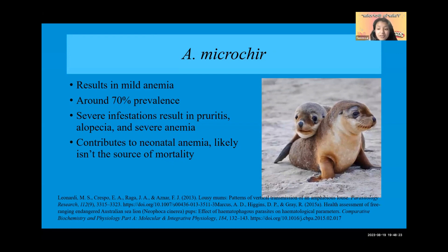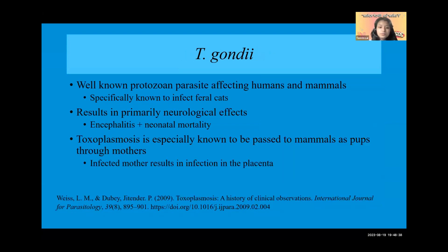If an infection is severe, it will result in pruritus (severe itching), alopecia (loss of hair), and severe anemia. While A. microchir definitely contributes to neonatal anemia, it likely isn't the primary source of high pup mortality. However, it does weaken the species as a whole.